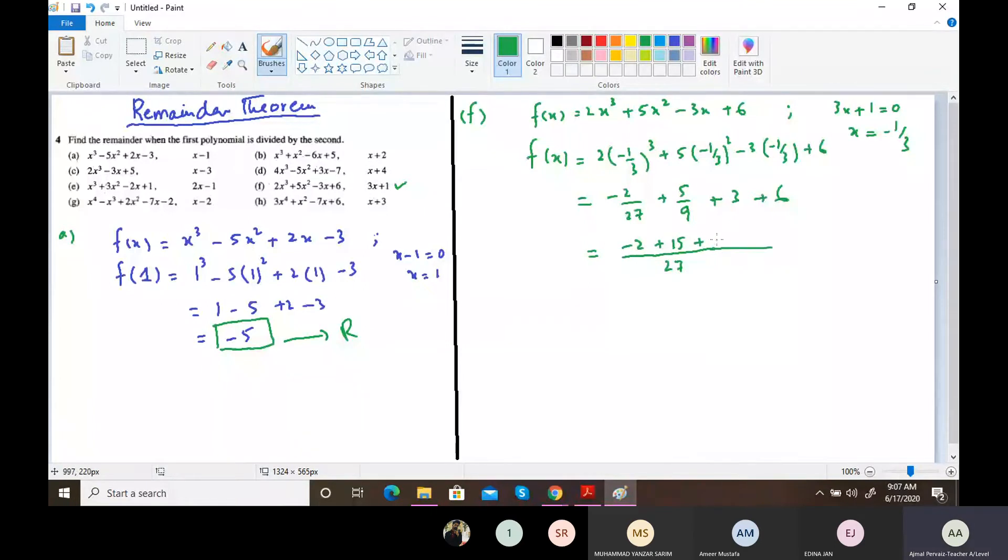By taking LCM, I am simplifying it. 27 × 9, how much comes? Anyone having calculator right in front of you, please quickly give me an answer.